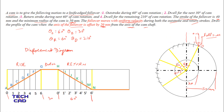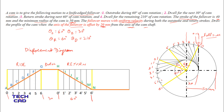Label the divisions starting from 0. Now connect all these divisions as tangent lines to the 20 mm offset circle. From division 0, draw a tangent to the circle; from division 1, draw a tangent to the circle; and so on for all divisions. Similarly, for the return angle, draw tangents from 0-dash, 1-dash, and all subsequent divisions to the 20 mm offset circle.